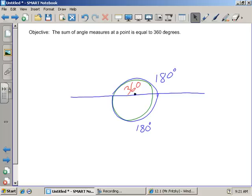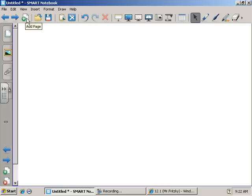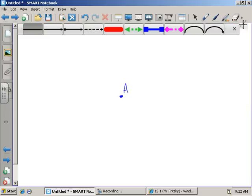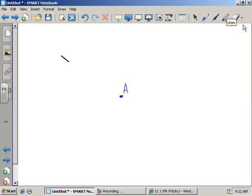Today we're going to use that fact to find some missing angle measures, kind of like we did yesterday with our 180 degree rule. So here we go. If I have a point here, we'll call this point A, and then some line segments come in contact with that.